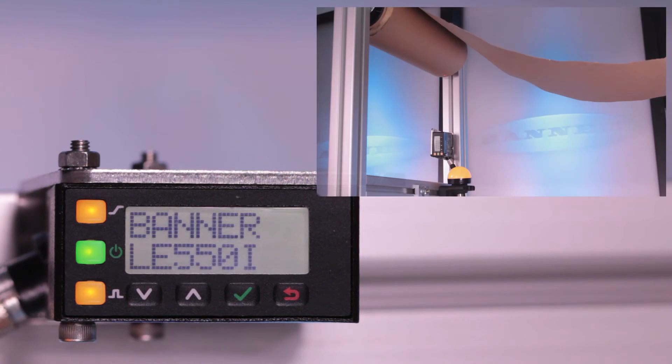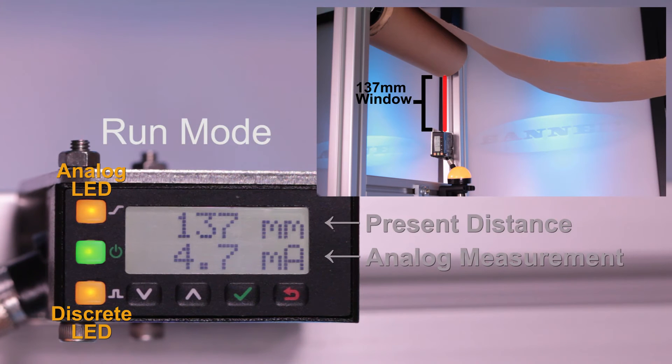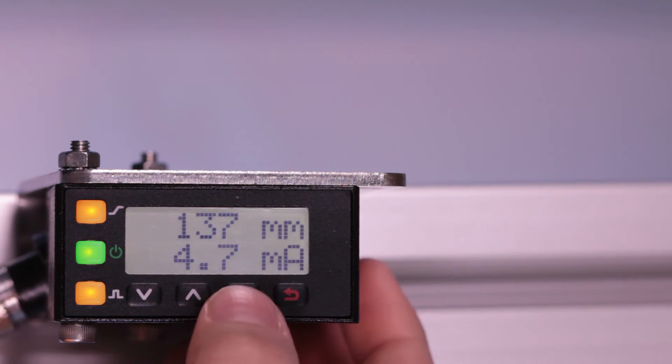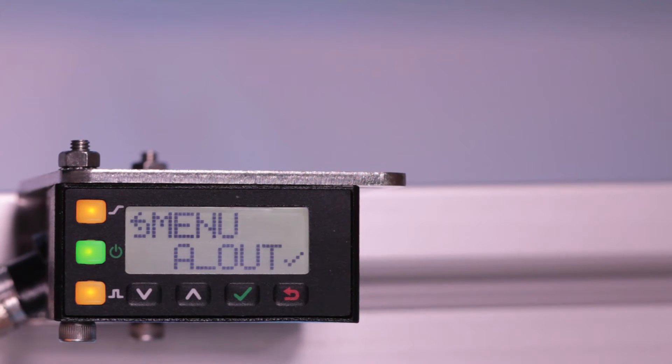When first powered on, the LE begins in run mode, displaying the present distance and analog measurement. Click the enter button to access the sensor menu.